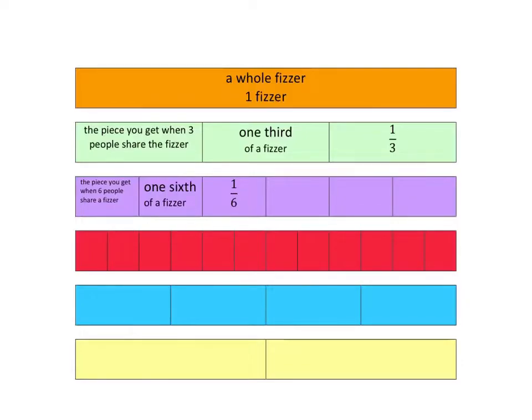Focus on the red fizzer now. These pieces are too small for me to write stuff in, so I'm just going to tell you about it. With the red fizzer, I've cut it up into 12 pieces, so I'm sharing this fizzer between 12 children. The name of each of these little pieces is one-twelfth and it's written like this. The 12 at the bottom tells us we've cut the fizzer up into 12 pieces and each person is just getting one of those pieces.